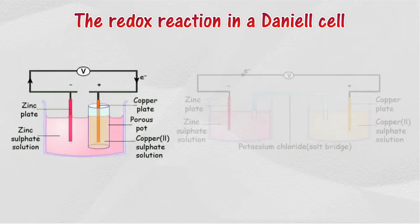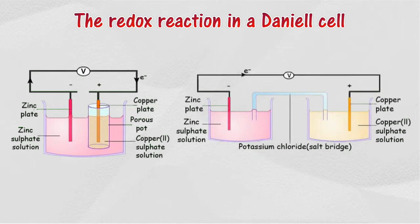Daniell cells comprise of a zinc rod and copper rod that are immersed into the zinc sulfate solution and copper sulfate solution respectively. Both solutions are separated by either a porous pot or a salt bridge. Zinc is more electropositive than copper.